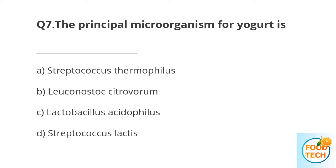Question number 7. The principal microorganism used for yogurt is: A. Streptococcus thermophilus. B. Leuconostoc citrovorus. C. Lactobacillus acidophilus. D. Streptococcus lactis.